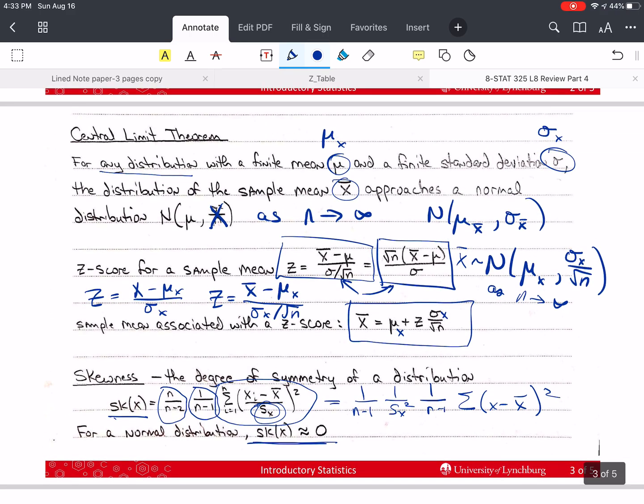Skewness should be around zero for anything that's symmetric. The further away from zero, either positive or negative. You can have skewed to the right, skewed to the left. If it's skewed to the left, it's called a negative skew. If it's skewed to the right, it's called a positive skew.